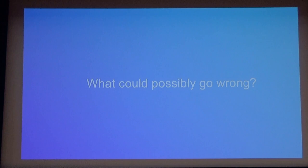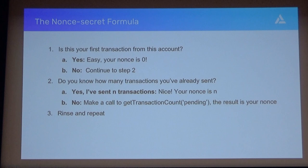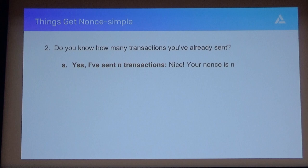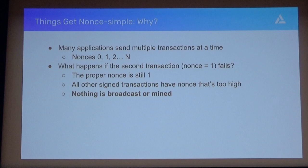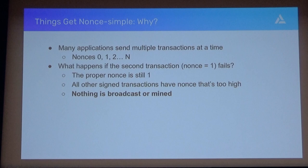Will it possibly go wrong? As it turns out, a lot can go wrong. Let's dig into one of these steps. When you know the number of transactions you've sent, that's supposed to be your nonce—that's what a nonce means. But it's not actually going to work all the time. The reason is that most applications are sending multiple transactions at a time, intending for multiple transactions to appear in a single block. When you do that, you're submitting them with incrementing nonces—let's say from zero to N. So the question is: what happens if one of those transactions fails? When a transaction with a nonce that's too high hangs, and there's no transaction that succeeded with the prior nonce, all of your other transactions are hanging—effectively nothing is broadcast or mined.